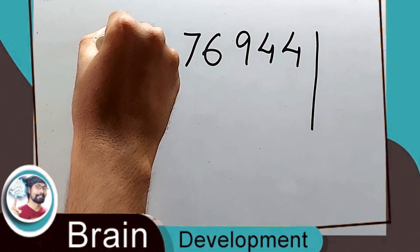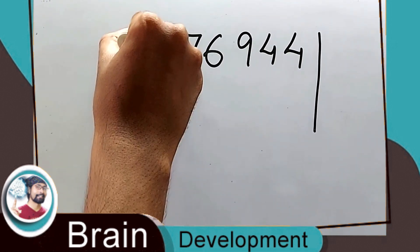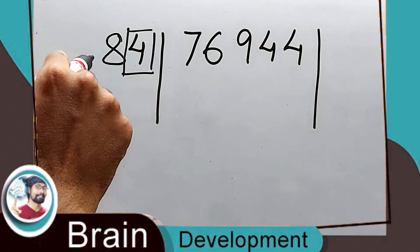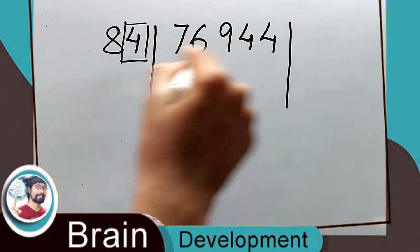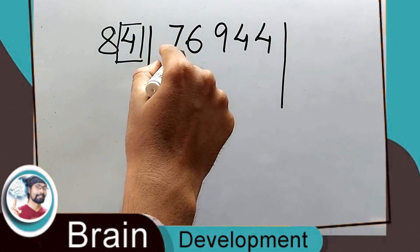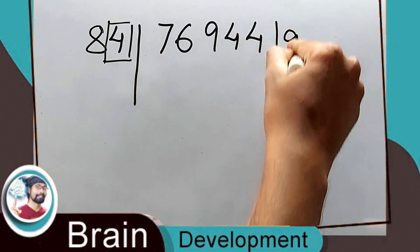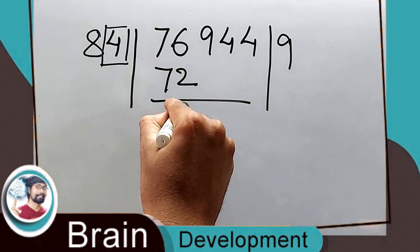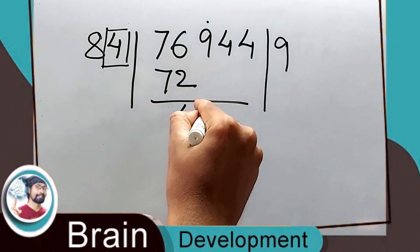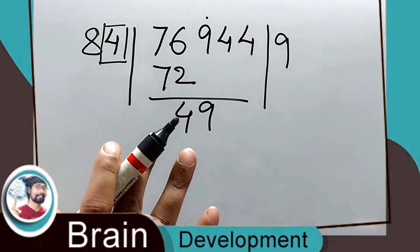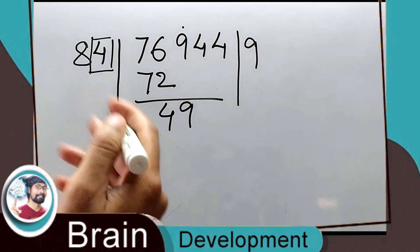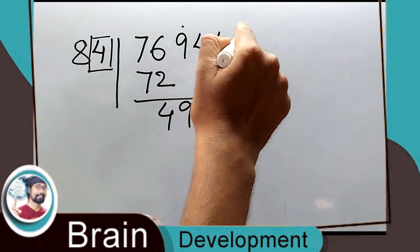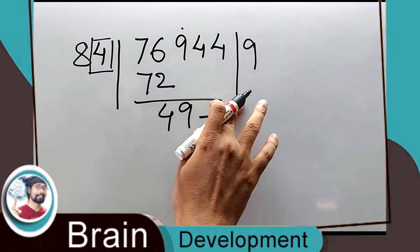This 4 has to be taken out so we divide by 8 only. Eight nines are 72, so this 9 will come down. Now you tell me — this 4 has to be multiplied with this 9. Four nines are 36.